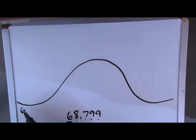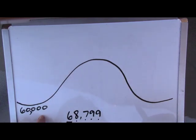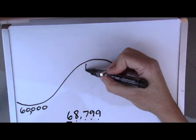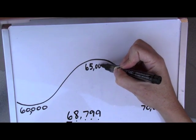So that's one, two, three, four zeros. Sixty thousand, so up here we're going to write seventy thousand, and in the middle we'll write sixty-five thousand.